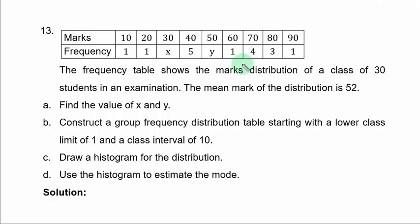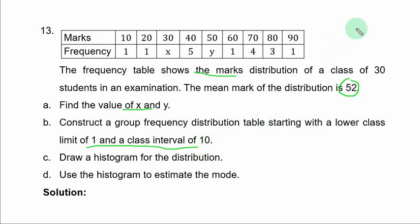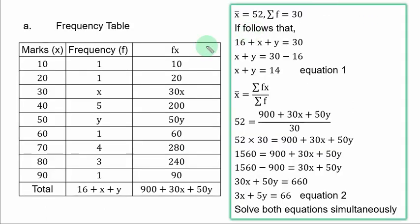Question 13. The frequency table shows the mark distribution of a class of 30 students in an examination. The mean mark is 52. Part A: find the values of x and y. Part B: construct a grouped frequency distribution table starting with a lower class limit of 1 and class interval of 10. Part C: draw a histogram. Part D: use the histogram to estimate the mode.